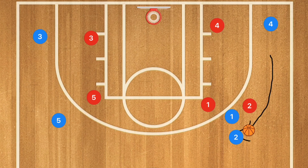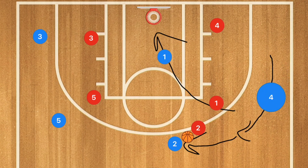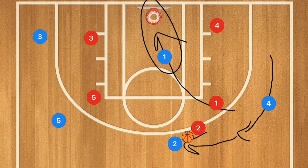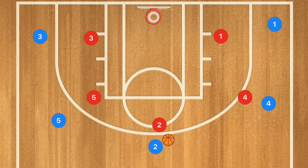Player two gets the ball off that dribble handoff. Whether or not there's a switch, it doesn't matter. Player one rolls towards the basket and player four pops up to the free throw line extended. If player one is open, give him the ball — simple. If he's not open, he just pops out and you're still in your five-out offense.